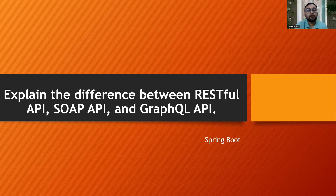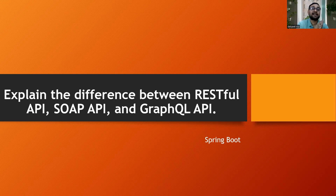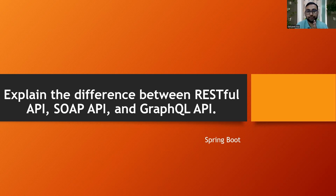The next question is: explain the difference between RESTful API, SOAP API, and GraphQL API. There are multiple levels of differences. SOAP supports only XML, while RESTful API can support JSON, XML, or other formats for requests and responses. GraphQL is a different version of the API altogether. You should know at least five differences — you can find them easily via a Google search.